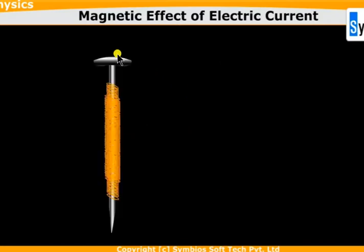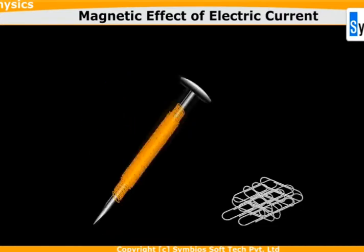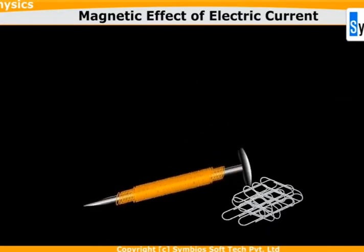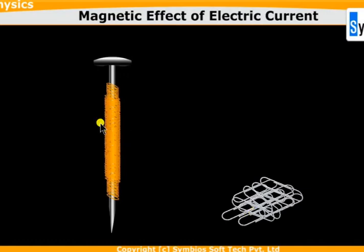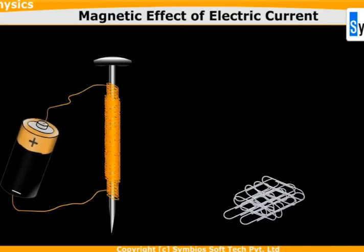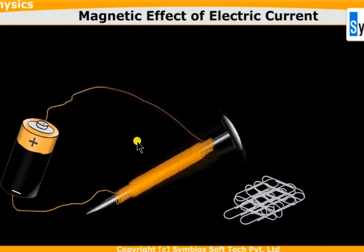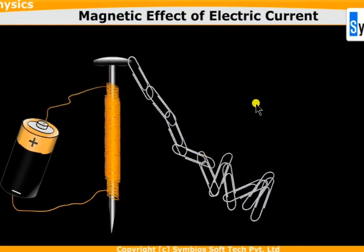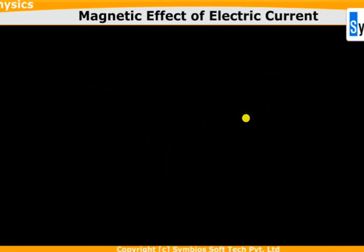Consider this demonstration: a nail bound by wire is not attracting another metal initially. But if the wire is connected to a battery, current flows through the wire and the nail becomes a magnet, meaning it can easily attract other metallic conductors.